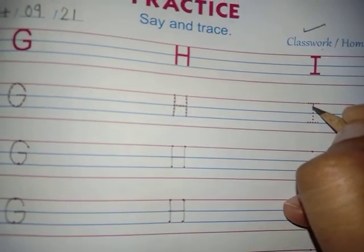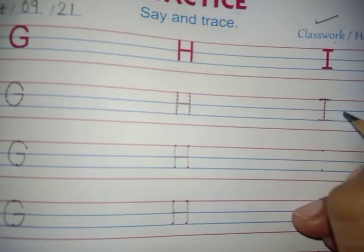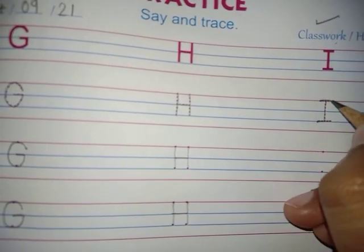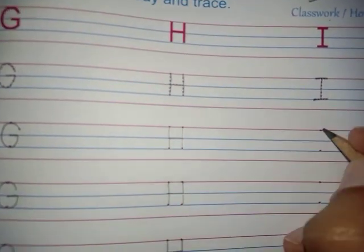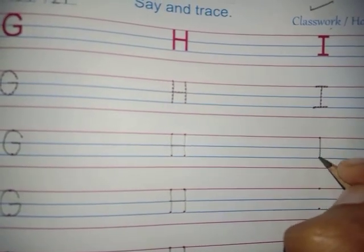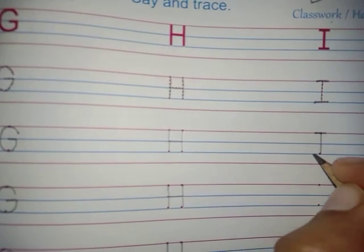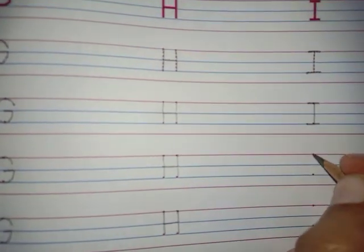Then I — standing line, sleeping line, sleeping line — letter I. Standing line, sleeping line, sleeping line — I. Which letter we are making now? I. Standing line, sleeping line, sleeping line — I.